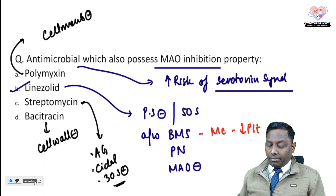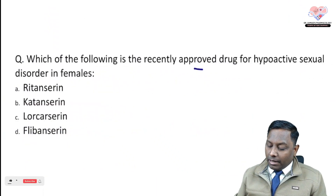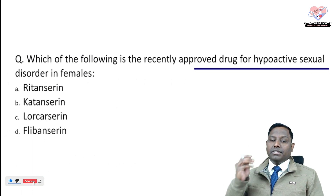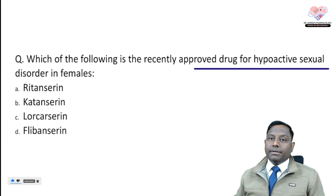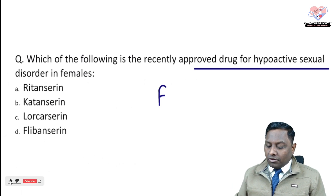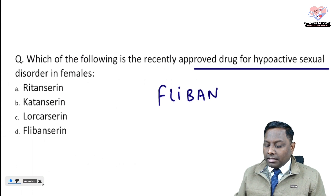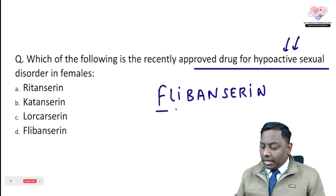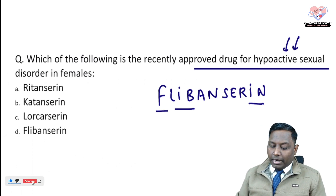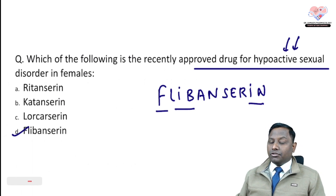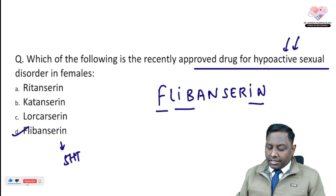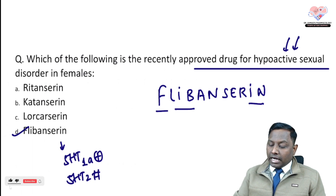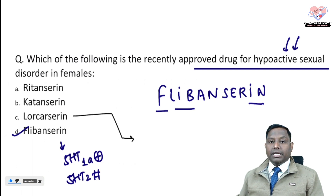Which of the following is a recently approved drug for hypoactive sexual desire in females? We have covered this question in a previous episode, but let's revise it. The drug that increases female libido is flibanserin. It is a 5-HT1A agonist and 5-HT2 antagonist, used for hypoactive sexual desire disorder in females.